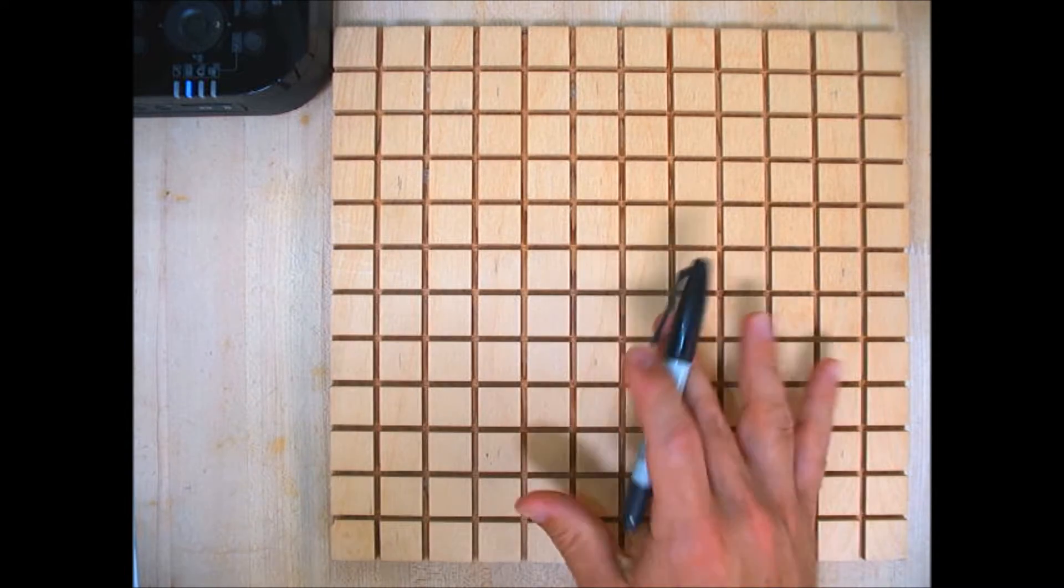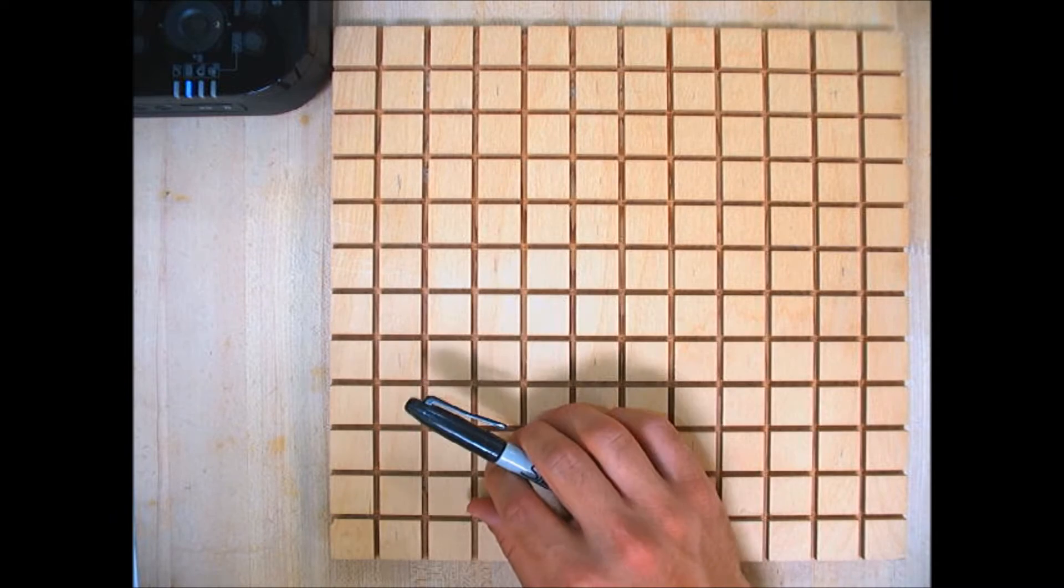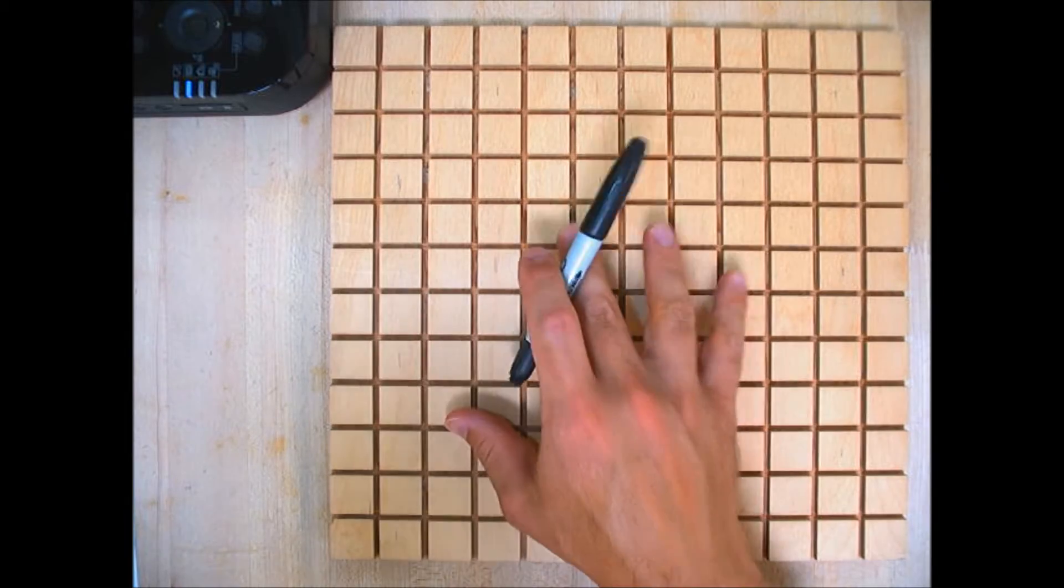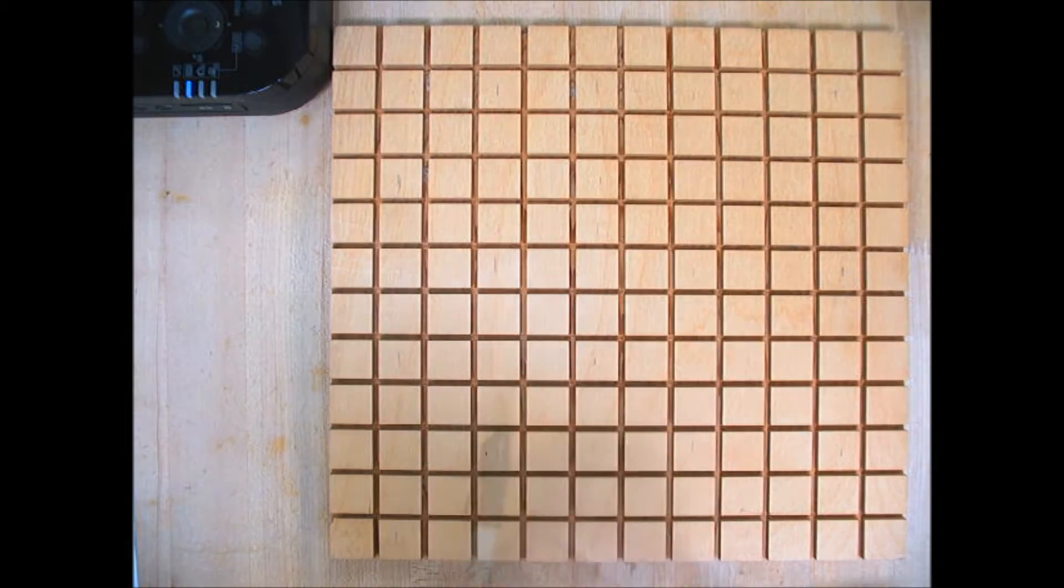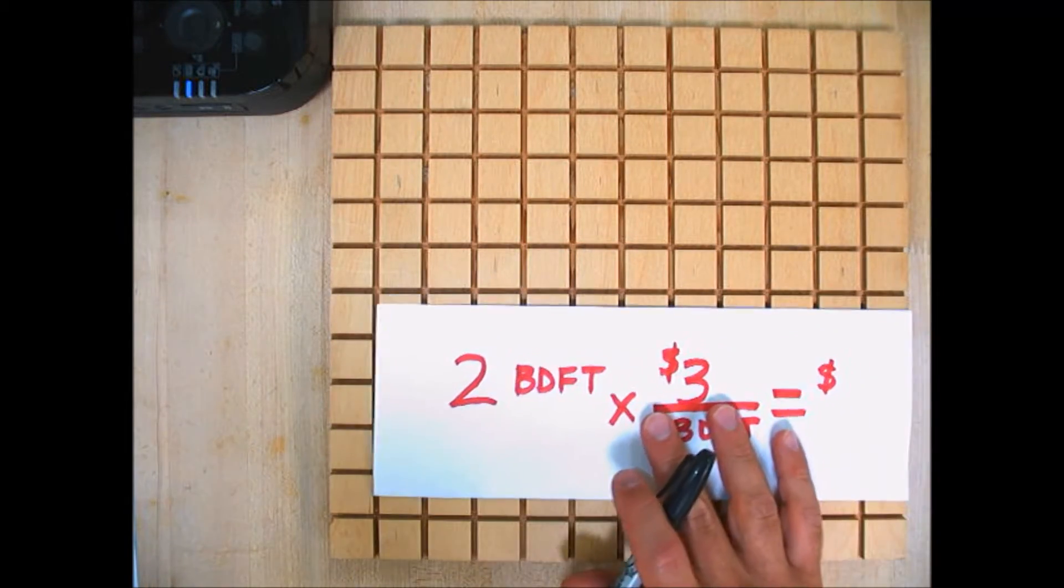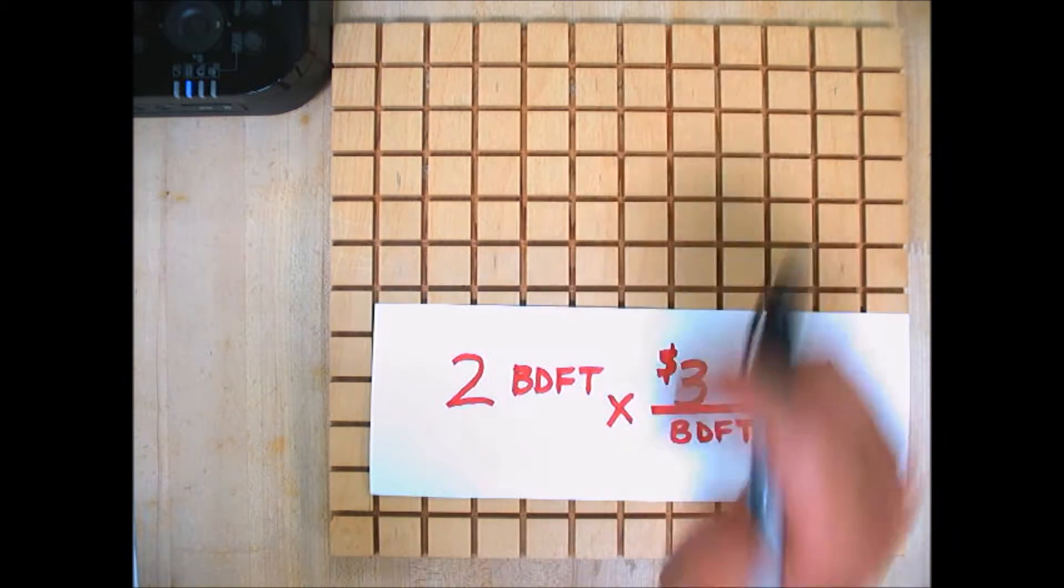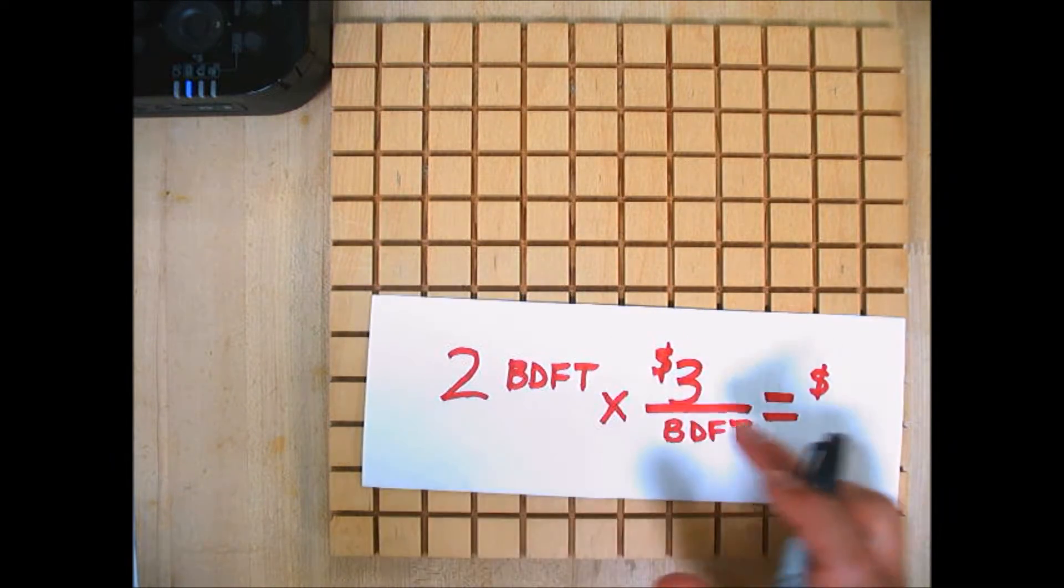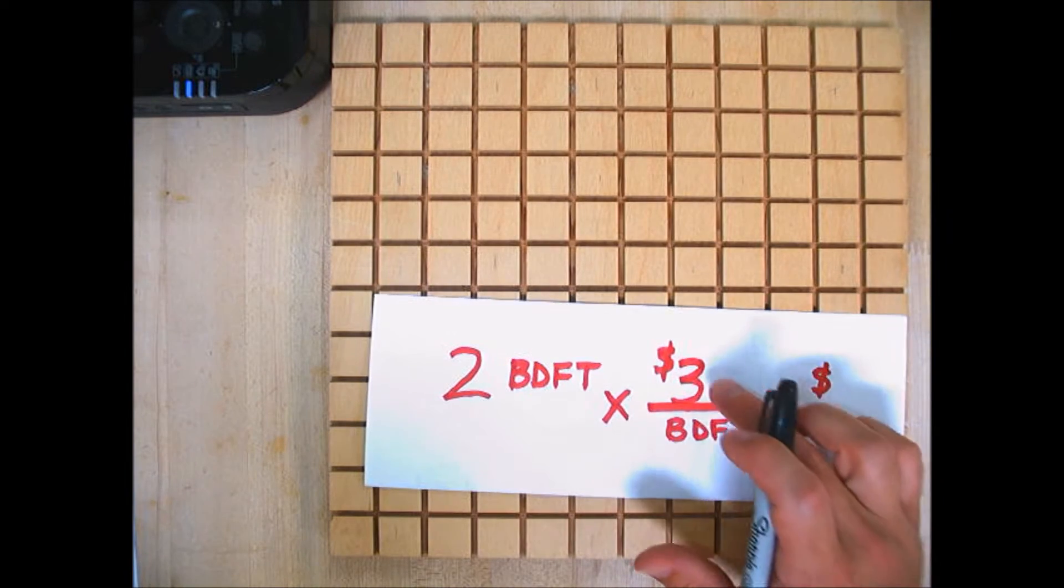They'll tell us what it would cost to buy one of these in different species. In red oak this might cost three dollars, in walnut it might cost seven dollars. Now these prices are per board foot, so if I want two of these I need two board feet. I need to multiply that times the cost per board foot.